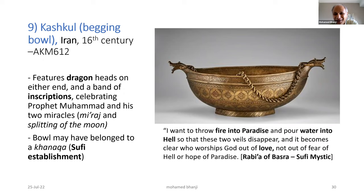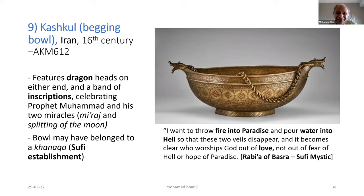We also have an object that could be found in a Sufi establishment — it is known as a Kashkul or begging bowl. The inscriptions speak about the Prophet Muhammad's two miracles: one is the Miraj, his accession mentioned in Surat al-Isra where he encounters the divine, and also his miracle of splitting the moon. I had been a tour guide for more than four years and used to pass this object on every tour, until one day I noticed that at the two ends are two dragon heads — and I asked myself: what do dragons signify in Islamic art?